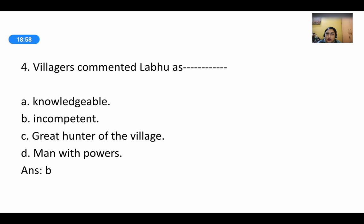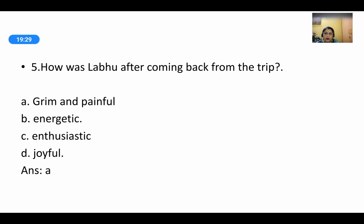MCQ 4: 'Villagers commented upon Labu as ______.' Options: knowledgeable, incompetent, great hunter of the village, or man with passion. The answer is option B — incompetent. In Labu's absence, villagers criticized him as incompetent — someone not competent enough to do things. MCQ 5: 'How was Labu after coming back from the trip?' Options: grim and painful, energetic, enthusiastic, or joyful. The answer is option A — grim and painful. Thank you.